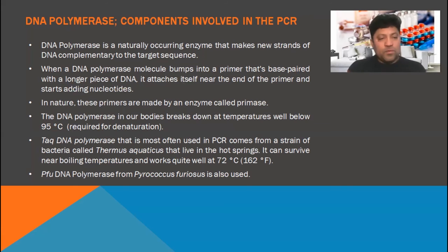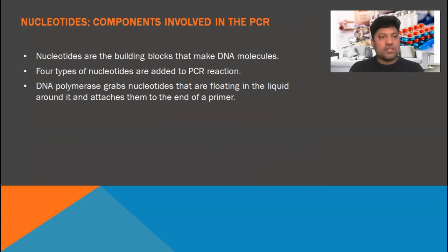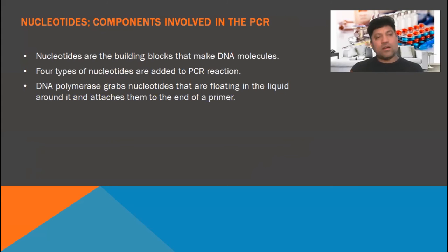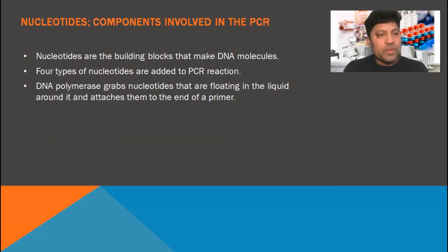The Pfu DNA polymerase from Pyrococcus furiosus is also used for this purpose. The next component is the nucleotides. There are four major kinds of nucleotides: adenine, guanine, cytosine, and thymine. They are frequently used for the synthesis of DNA and RNA. Nucleotides are the building blocks that make DNA molecules. Four types of nucleotides are added to the PCR reaction. DNA polymerase grabs nucleotides floating in the liquid around it and attaches them to the end of a primer.